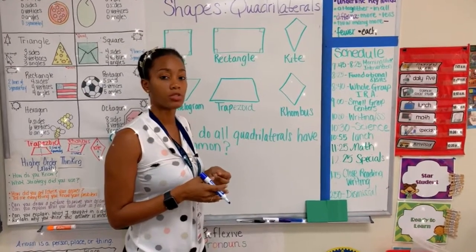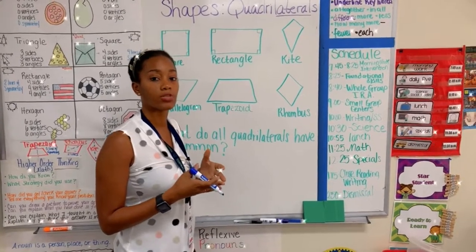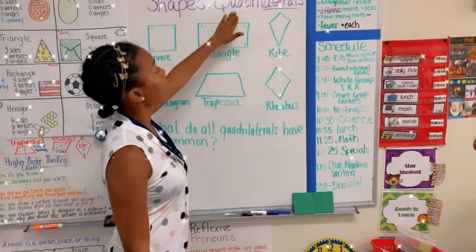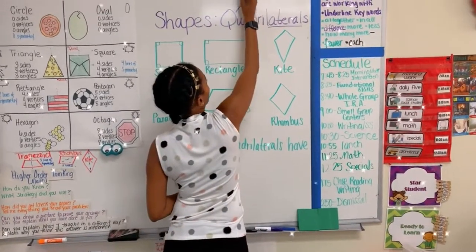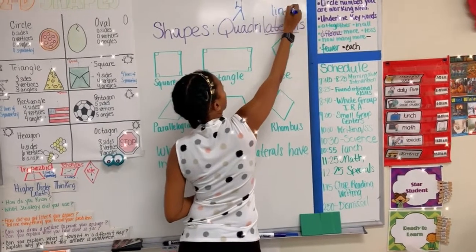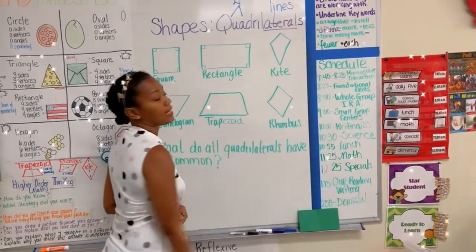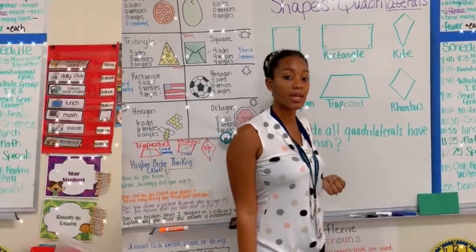Quadrilaterals are a two-dimensional shape. But before we get into it, let's look into the word quadrilateral. The word quad inside of quadrilateral means four, and the word lateral means lines. In each quadrilateral, you will notice that we have four straight lines.